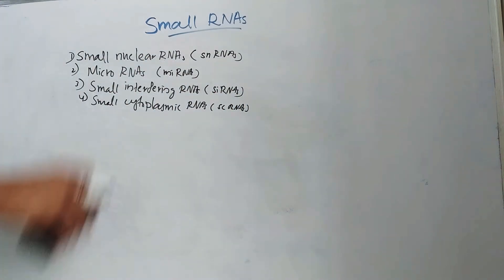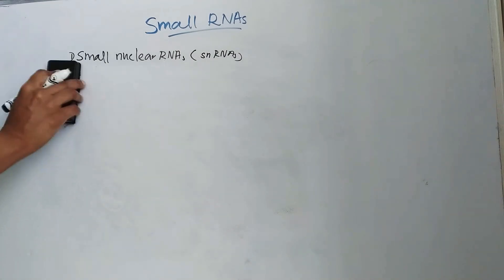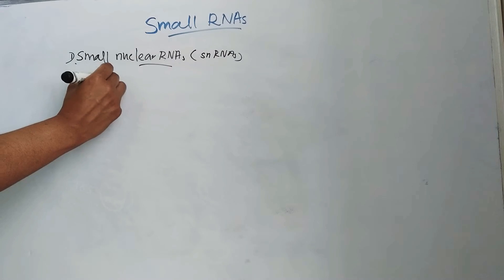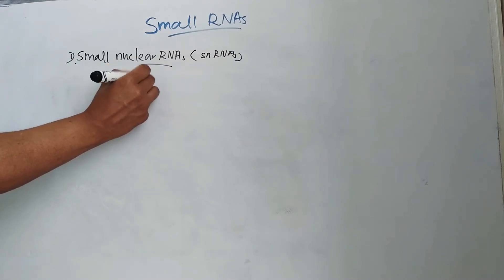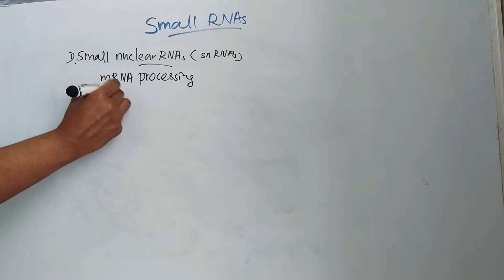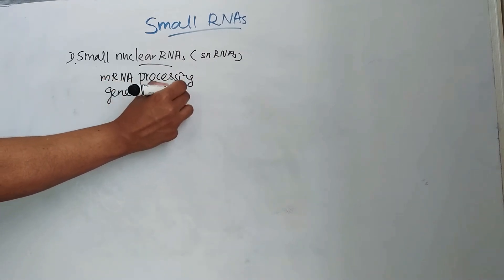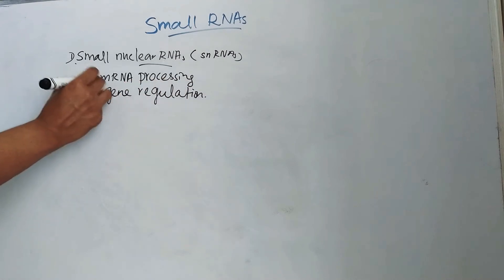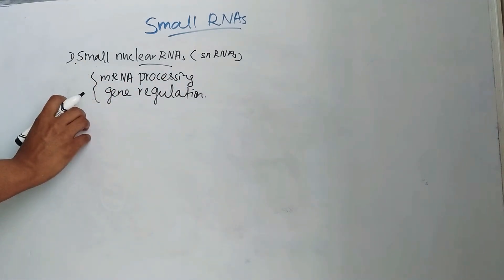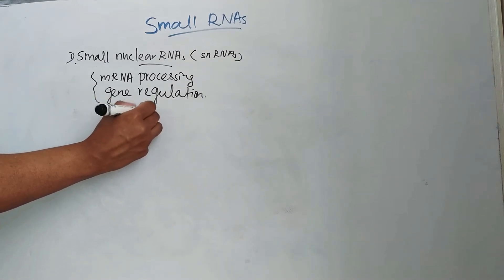First we will see small nuclear RNAs or snRNAs. These small nuclear RNAs are involved in mRNA processing and in gene regulation. These small nuclear RNAs have an average length of 150 nucleotides.